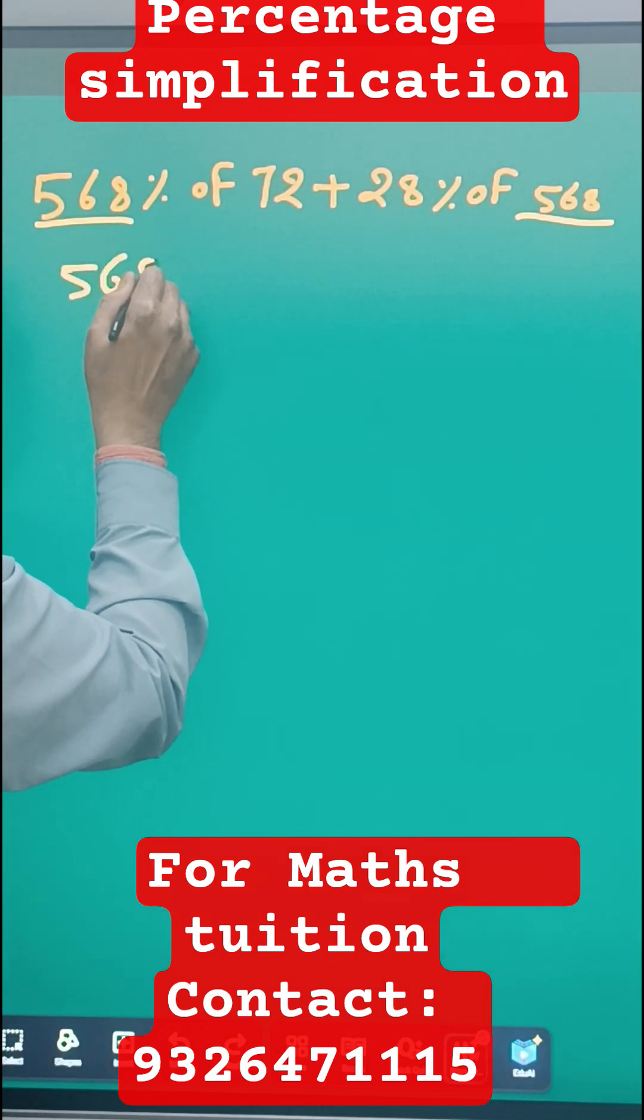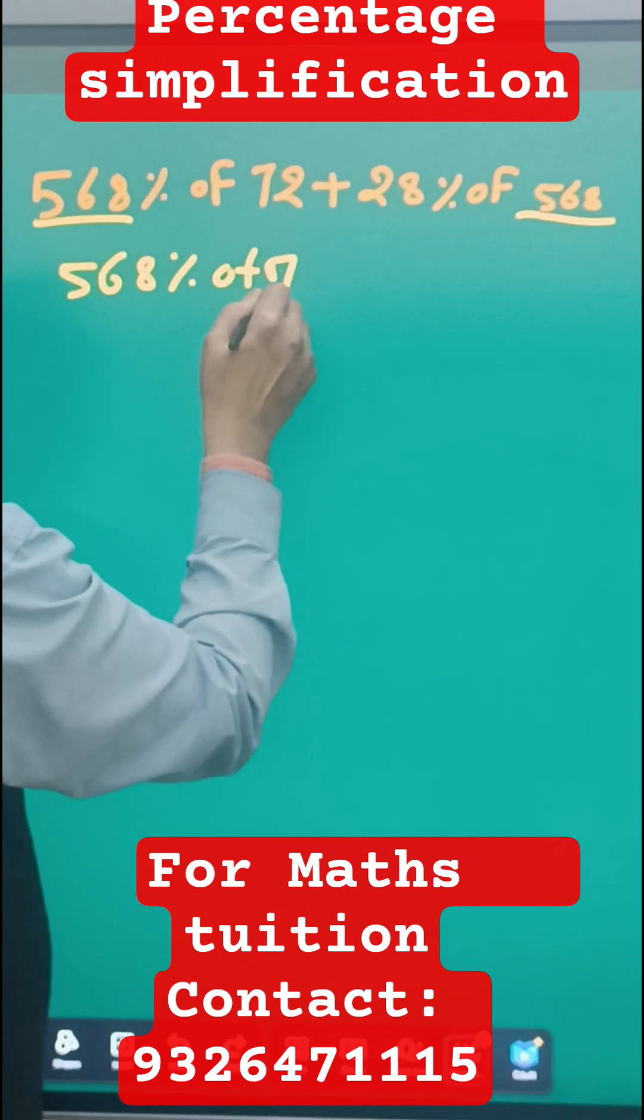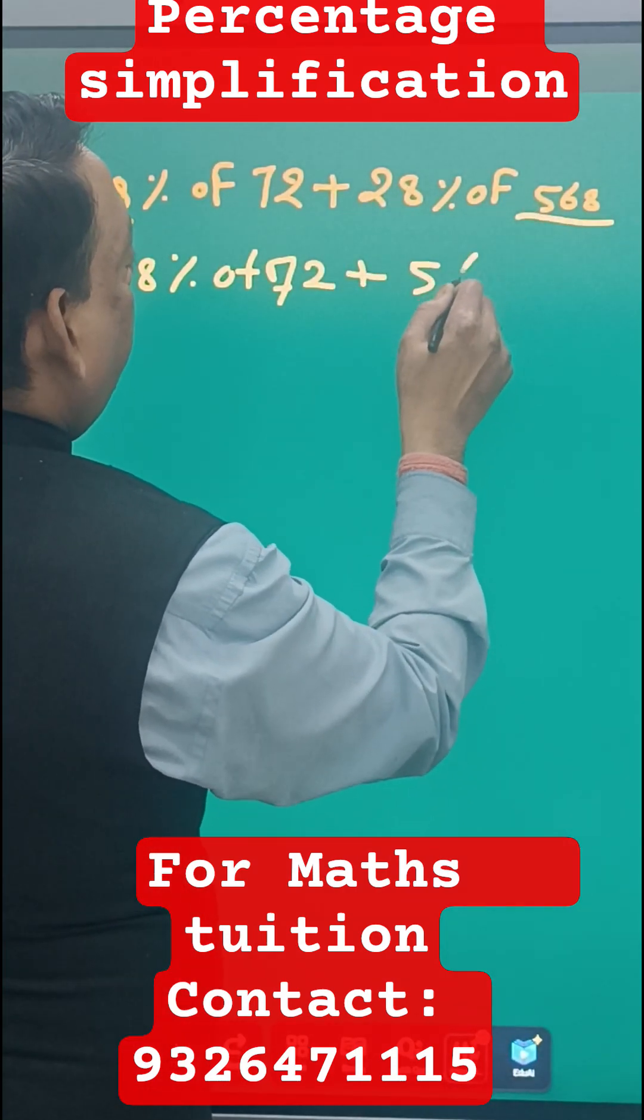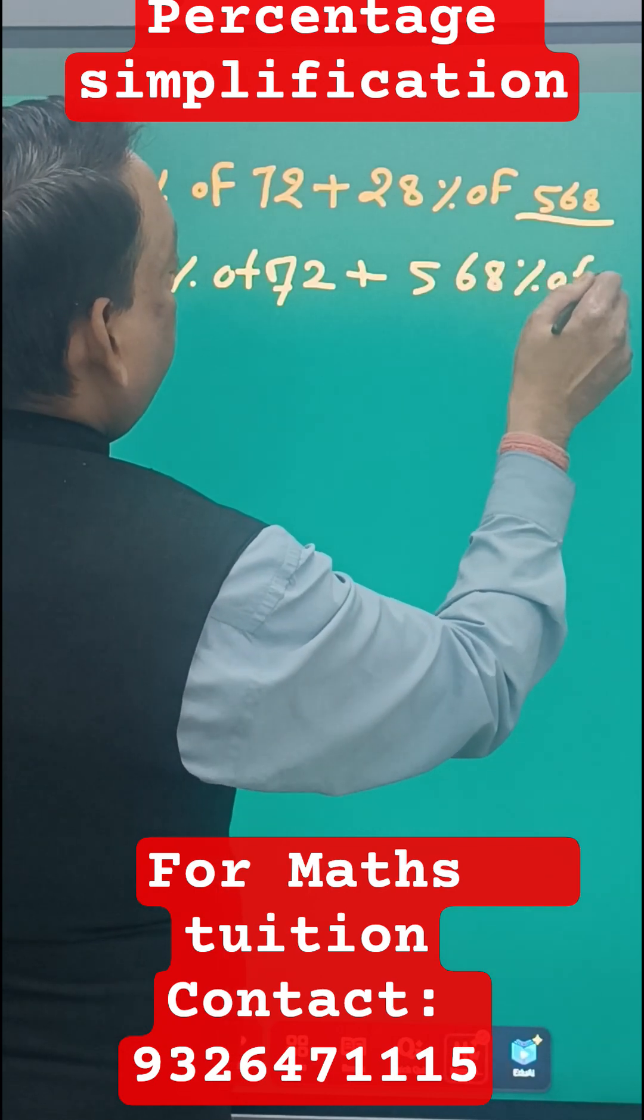This becomes 568% of 72, plus just rearrange here, just write here 568% of 28.